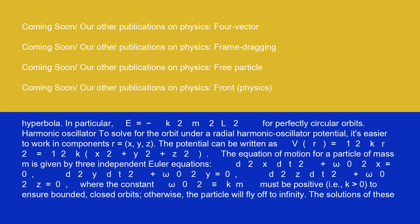Harmonic oscillator: to solve for the orbit under a radial harmonic oscillator potential, it's easier to work in components r equals (x, y, z). The potential can be written as V(r) equals (1/2)k r² equals (1/2)k(x² plus y² plus z²). The equation of motion for a particle of mass m is given by three independent Euler equations: d²x/dt² plus ω₀²x equals 0, d²y/dt² plus ω₀²y equals 0, d²z/dt² plus ω₀²z equals 0, where the constant ω₀² is identical to k/m must be positive, i.e., k > 0, to ensure bounded closed orbits. Otherwise, the particle will fly off to infinity.